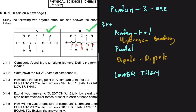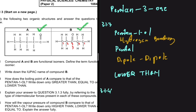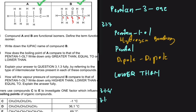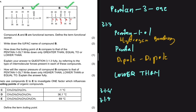In 3.1.4, the intermolecular forces in pentan-1-ol, which are hydrogen bonding, are stronger than the intermolecular forces in pentanal, which are dipole-dipole. If you have stronger intermolecular forces, then more energy is required to overcome those intermolecular forces, and as a consequence the alcohol, pentan-1-ol, will have a higher boiling point. That is the answer to 3.1.4.